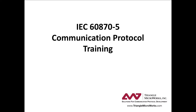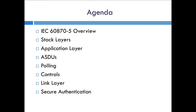Welcome to the Triangle Microworks IEC 60870-5 communication protocol training videos. This is the fourth video in the series. In the first three videos we provided an overview of IEC 60870-5. We looked at the application layer and ASDUs and dug into functionality like polling and controls. In this video we'll dig into the link layer, the transport layer, and the physical layer.